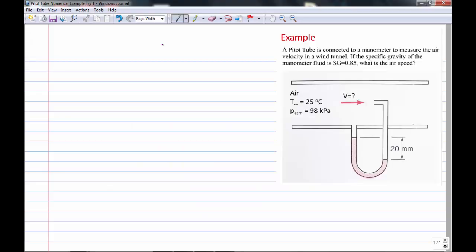Okay, so this is an example of using a pitot tube to measure the air velocity in a wind tunnel. We have almost this exact setup with an inclined manometer in the lab, in the fluids lab in East Kerr Hall. So the problem says a pitot tube is connected to a manometer to measure the air velocity in a wind tunnel. If the specific gravity of the manometer fluid is 0.85, what is the air speed?